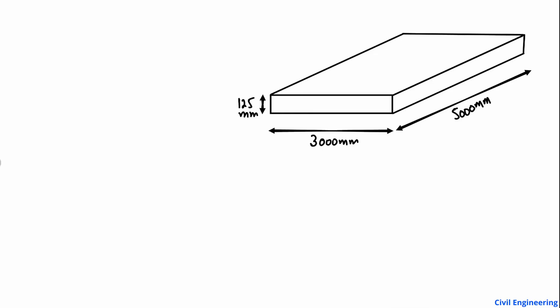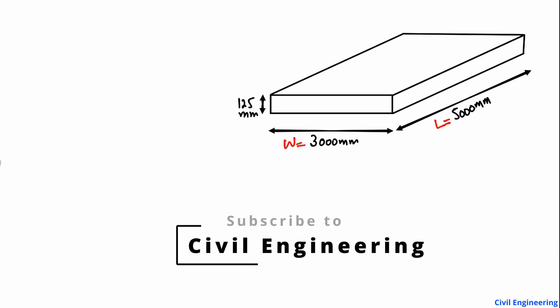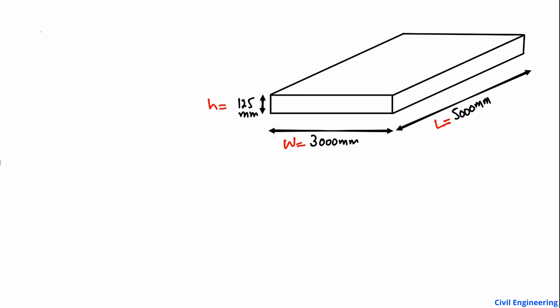Hello guys, welcome back to the Civil Engineering YouTube channel. Please subscribe to our channel for daily civil engineering videos. Today we are going to find out the quantity or the weight of concrete in a slab. We see here a slab with a length of 5,000 millimeters, a width of 3,000 millimeters, and a height or depth of 125 millimeters.